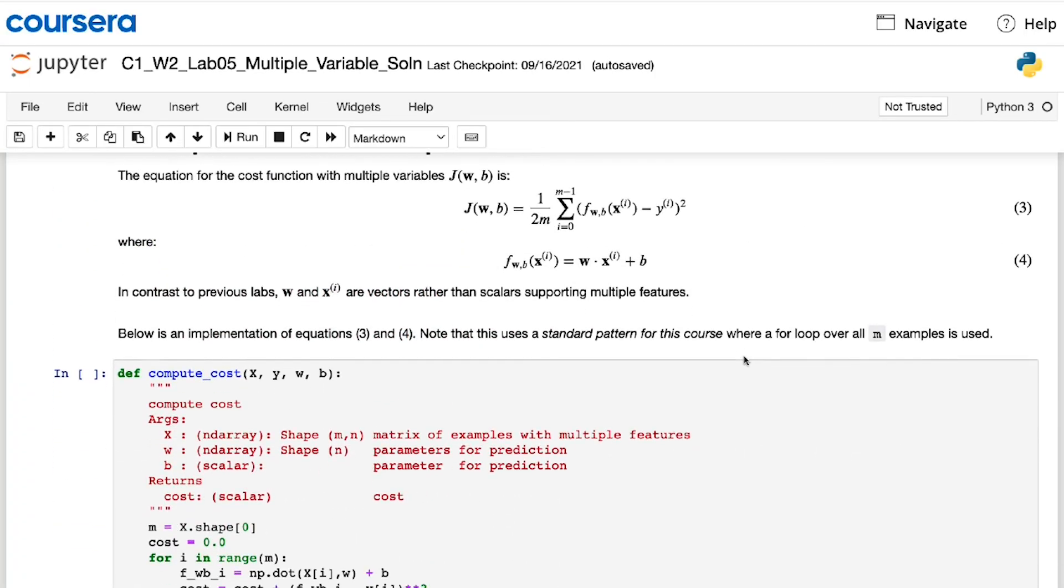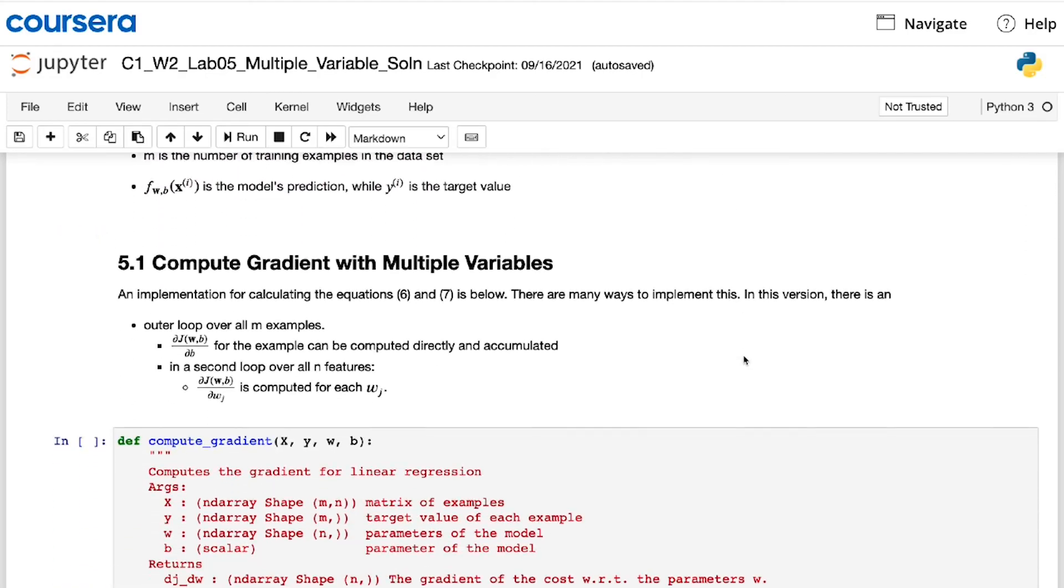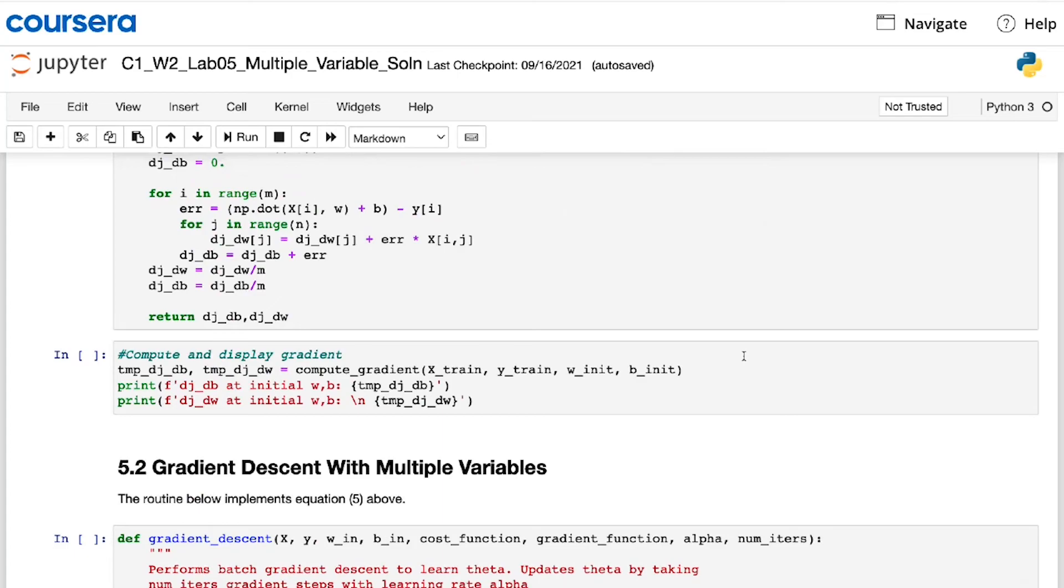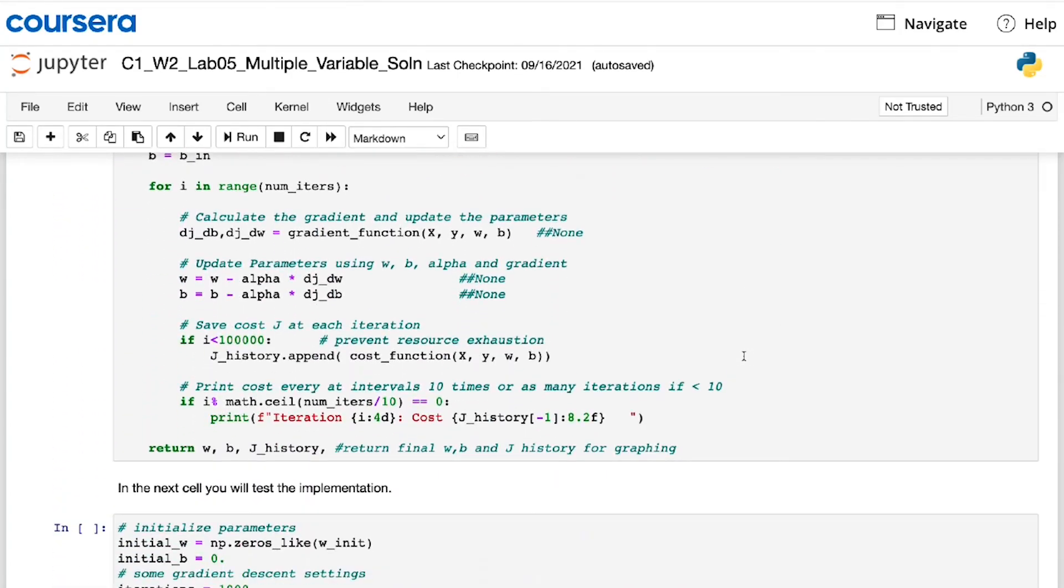You also see how to calculate the cost and implement gradient descent for a multiple linear regression model. This will be using Python's NumPy library.